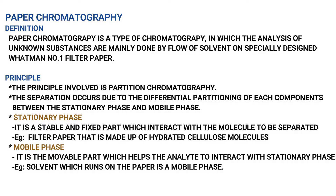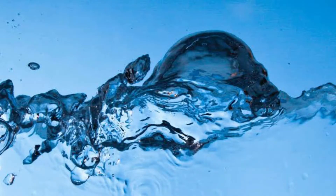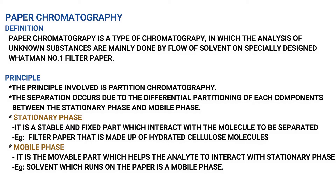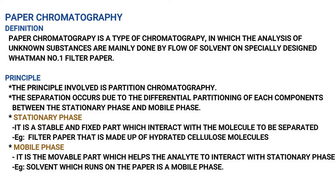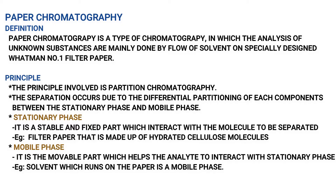Next is the principle. The principle involved is partition chromatography. In partition chromatography, for example, in two rooms there is a partition — like a bedroom and kitchen, they are different. So in two liquid phases, if the sample is separated, that is partition chromatography.